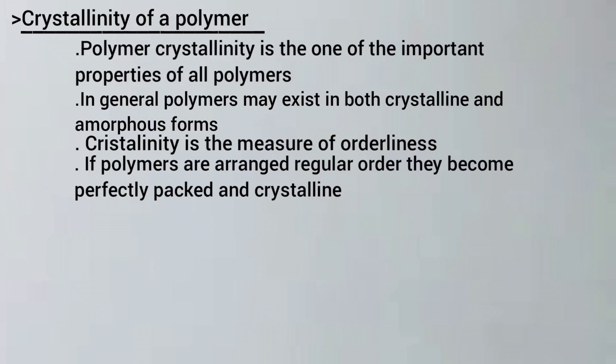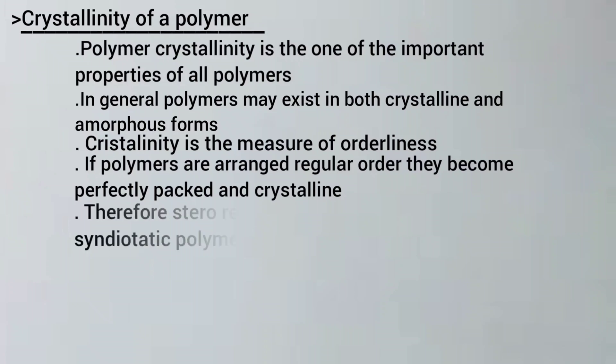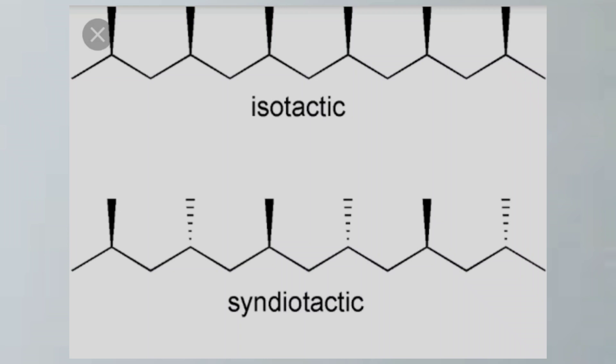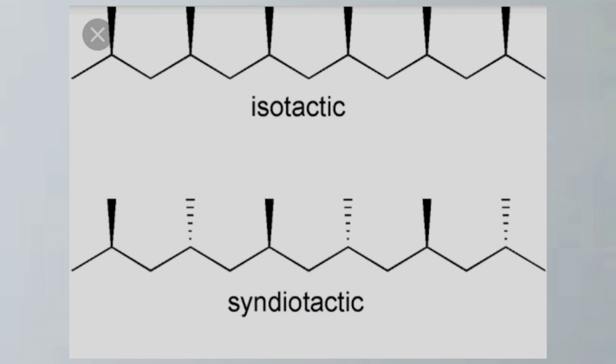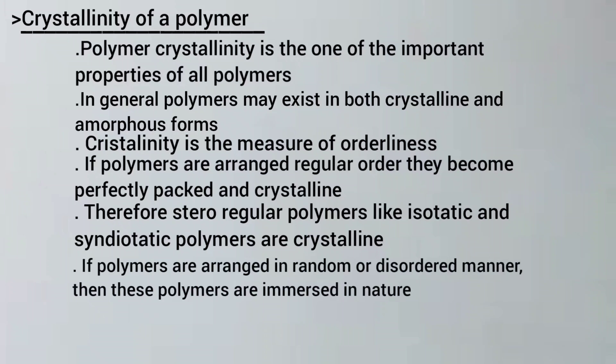Therefore, stereoregular polymers like isotactic and syndiotactic are seen as crystalline, as shown in the given pictures. If polymers are arranged in a random or disordered manner, then they exist in amorphous form.